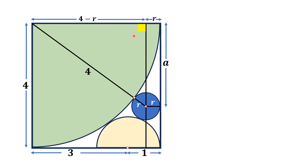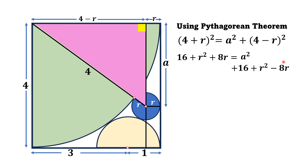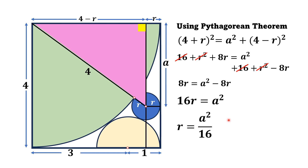Since this angle is 90 degrees, using the Pythagorean theorem on this right triangle we have (4 + r)² = A² + (4 − r)². Expanding both sides: 16 + r² + 8r = A² + 16 + r² − 8r. R² cancels and 16 cancels, giving 8r = A² − 8r, so 16r = A², and therefore r = A²/16.